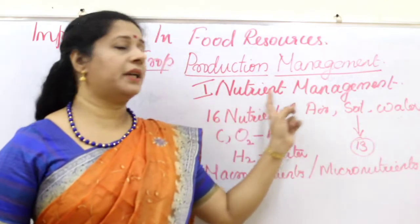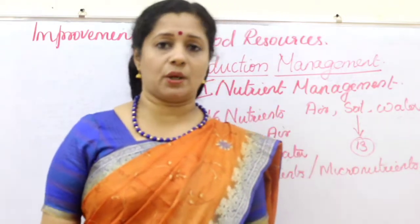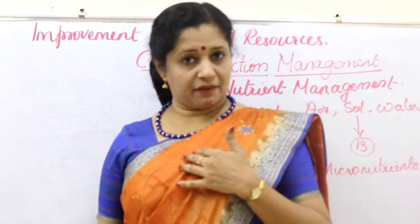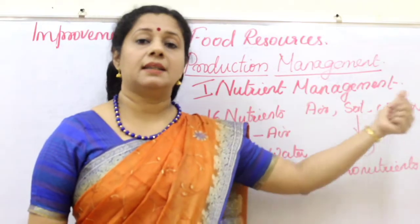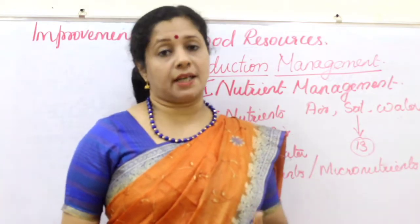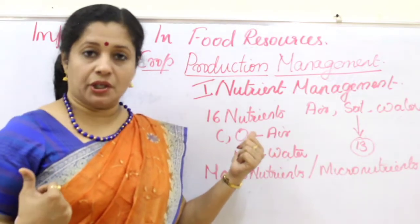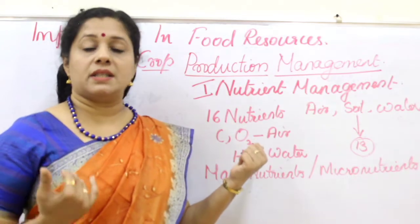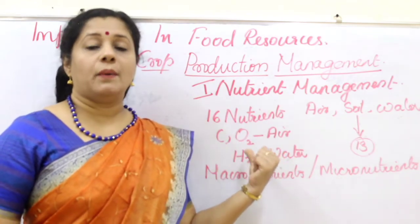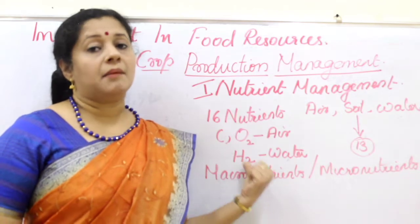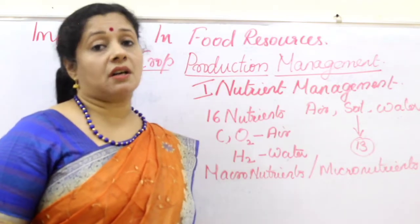We are now going to discuss nutrient management. Nutrients means the nourishment needed by plants — just like how we need nutrients. Plants also require nutrients, but from three different sources: air, soil, and water. Totally 16 nutrients are required by plants for their proper growth. Carbon and oxygen are obtained from air — carbon dioxide is absorbed during photosynthesis and oxygen is also available in nature for respiration. Water gives hydrogen to plants, and the rest of the minerals are obtained from soil, where they are present as charged particles called ions.